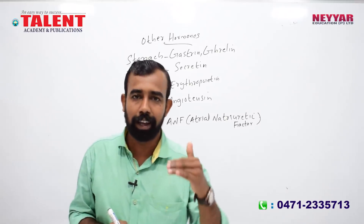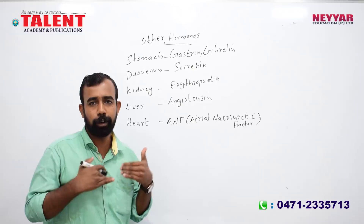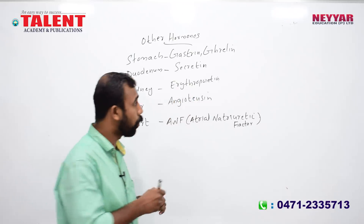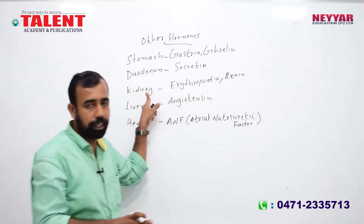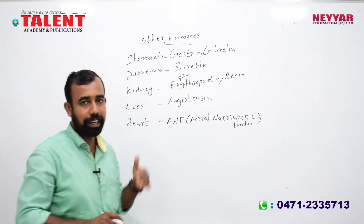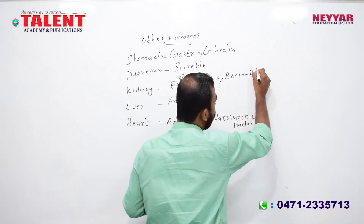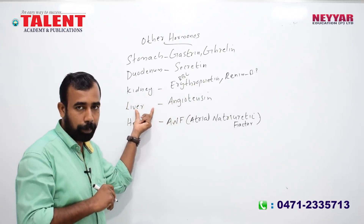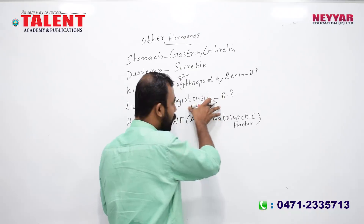The kidney has a secretion function. The kidney produces a hormone called erythropoietin. Erythropoietin stimulates the production of RBCs (red blood cells). The liver also produces a hormone involved in blood pressure regulation called angiotensin.